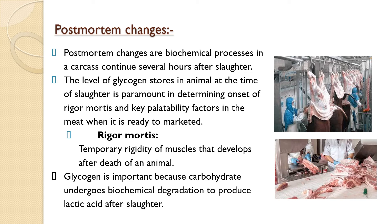The second factor affecting meat quality is post-mortem changes — the biochemical processes in meat that continue several hours after the animal is slaughtered. The level of glycogen stored in the animal at the time of slaughter is paramount in determining the onset of rigor mortis, and it is also a key palatability factor when the meat is ready for market. Rigor mortis is a temporary rigidity of muscles that develops after the death of an animal.